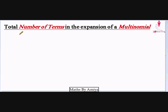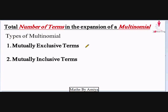In this concept video we try to learn how to find the total number of terms in the expansion of a given multinomial. The method of finding the number of terms totally depends on the type of multinomial. There are mainly two different types: mutually exclusive terms and mutually inclusive terms.